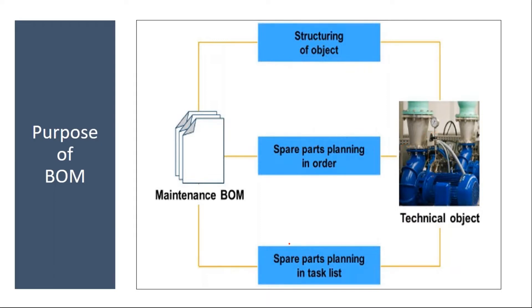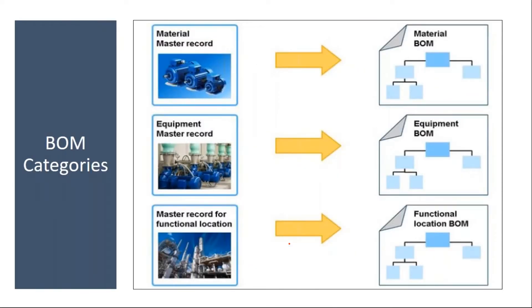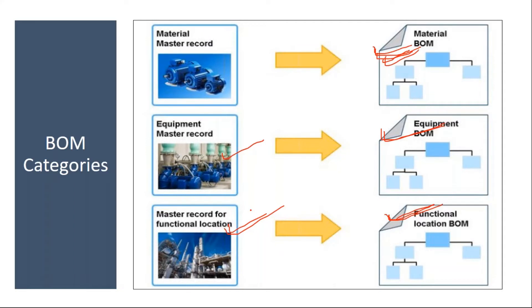The BOM categories used in the plant maintenance module are three types. One is equipment BOM — you create a BOM for a particular equipment. Then there is functional location BOM — a BOM created for a particular functional location. And sometimes they use material BOM, which is also called assembly BOM. So we have three types: equipment BOM, functional location BOM, and material BOM.